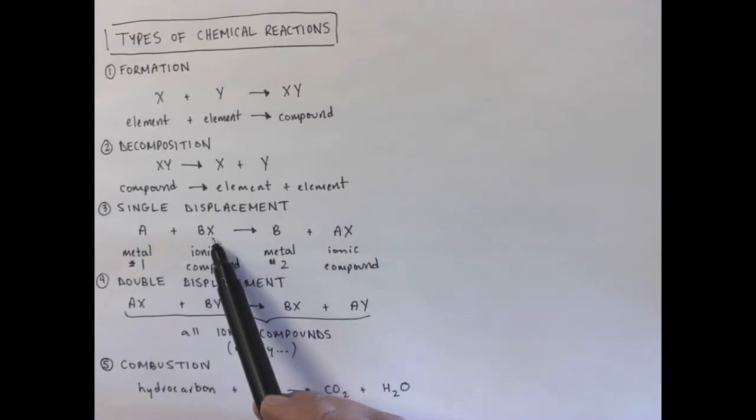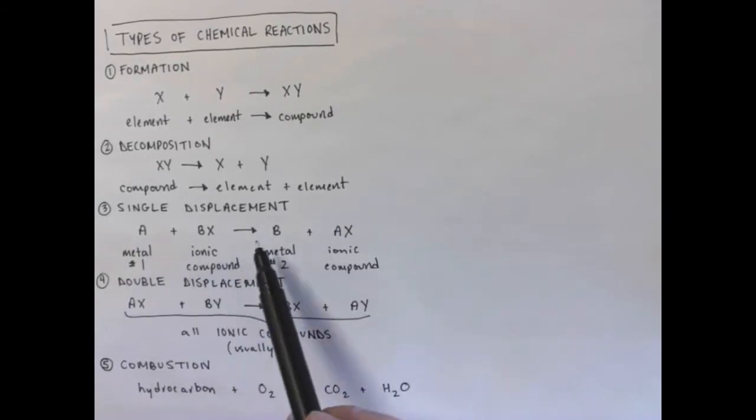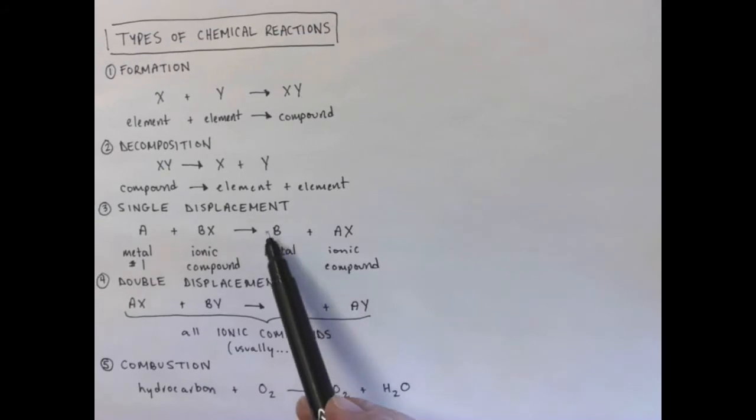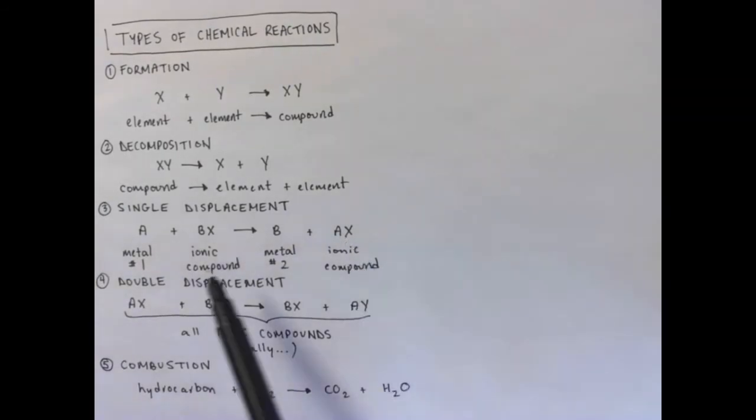So it's kind of like X is in a relationship with B, but then A comes around, looks more attractive. So X leaves B all alone, very sad, and X decides to hang out with A. It happens.